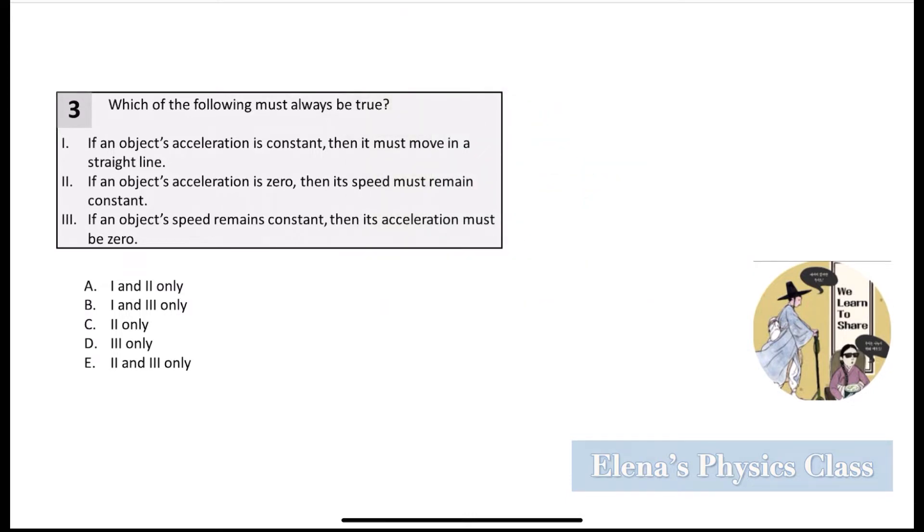Which of the following must always be true? 1. If an object's acceleration is constant, then it must move in a straight line. 2. If an object's acceleration is 0, then its speed must remain constant. 3. If an object's speed remains constant, then its acceleration must be 0.